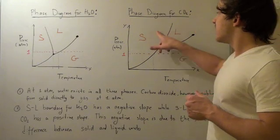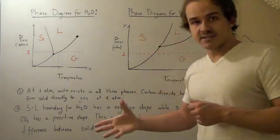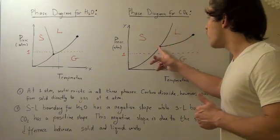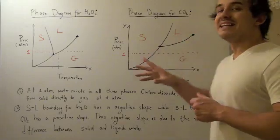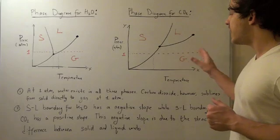For this guy, however, the solid is more dense than the liquid, and therefore this slope is positive. So if you place a solid carbon dioxide into the liquid, it's going to sink straight down.